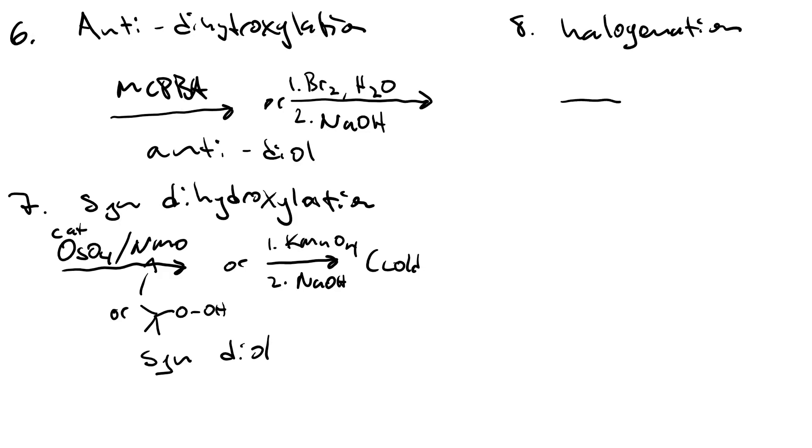If you react your alkene with a halogen, where X is either bromine, chlorine, or iodine, you get an alkyl dihalide, a vicinal dihalide, and the stereochemistry is anti.